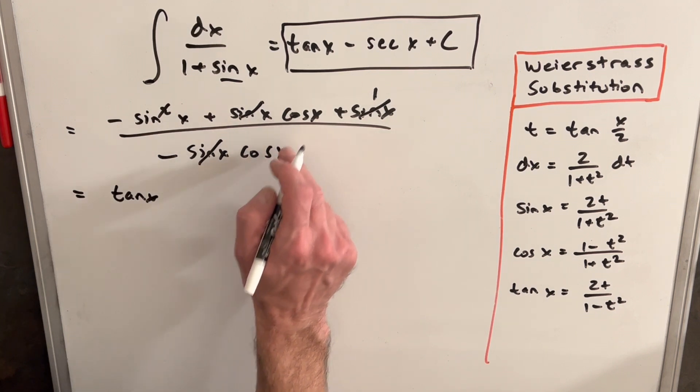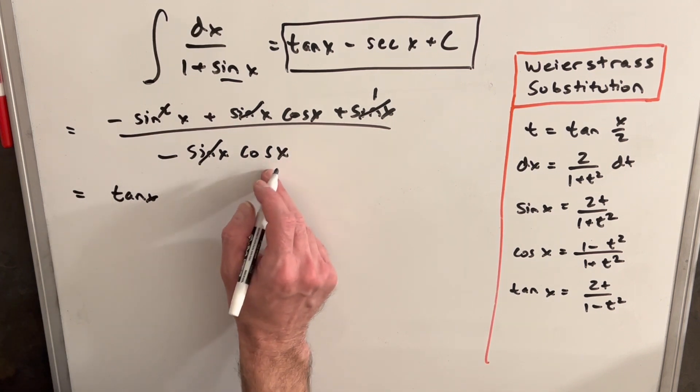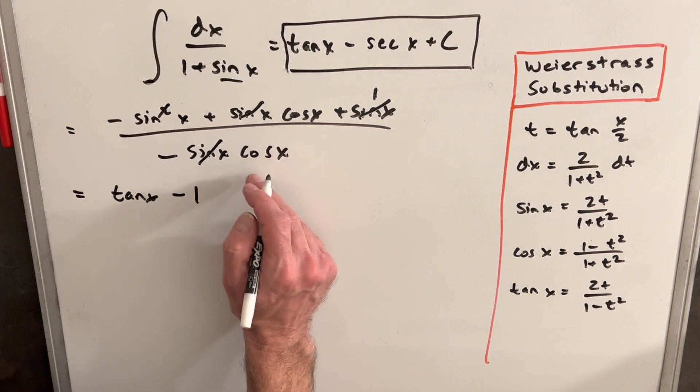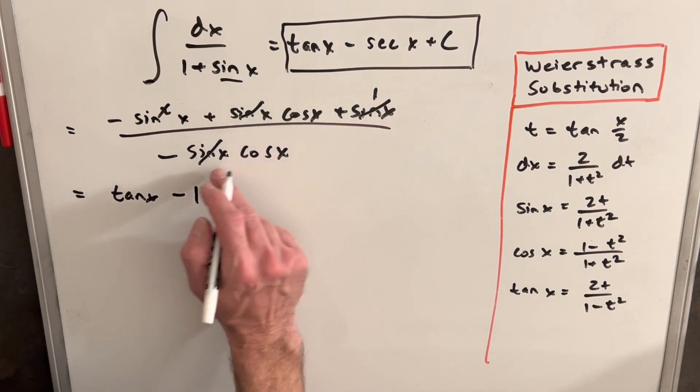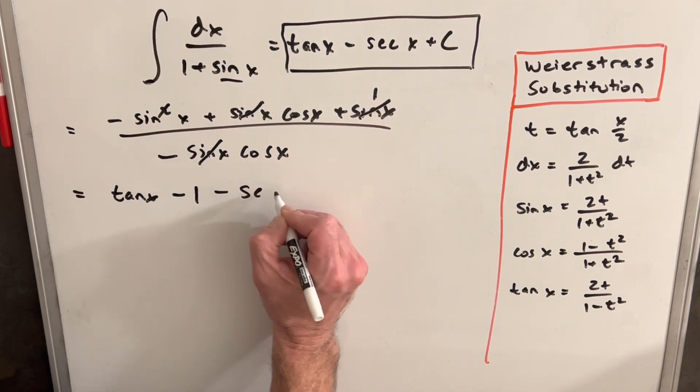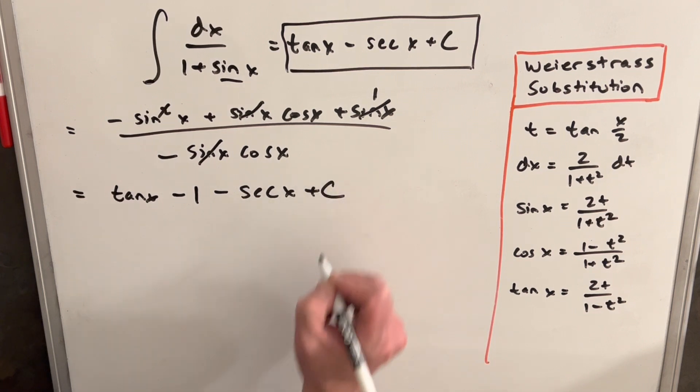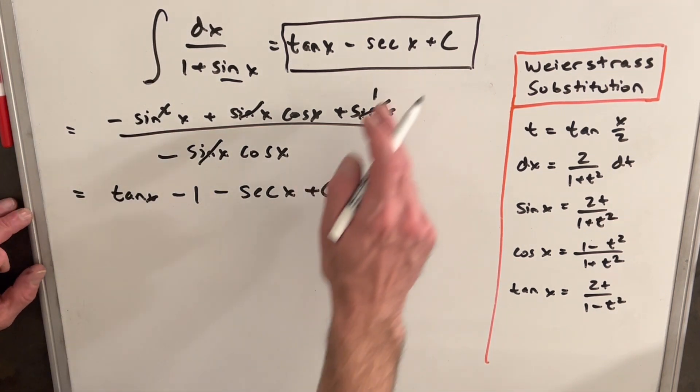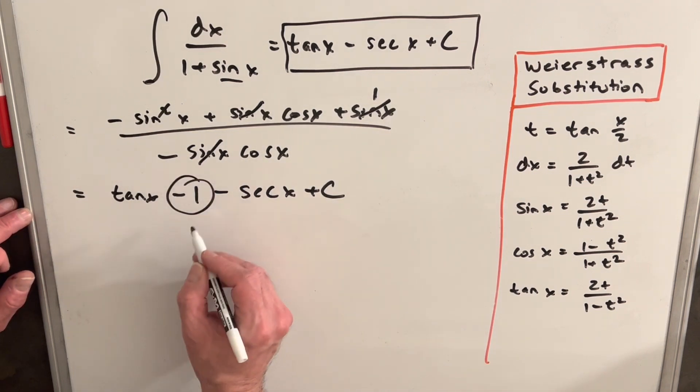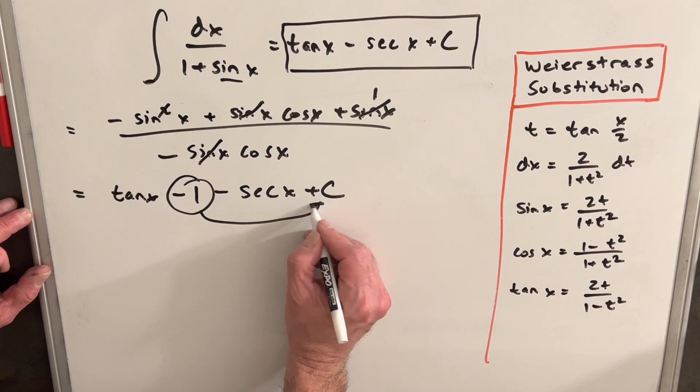Minus cos x over minus cos x is minus one. And then one over minus cos x is minus secant x plus c. You may think that this is still not the same as this, but when you have any constant values, they can be absorbed in the constant on an integral.